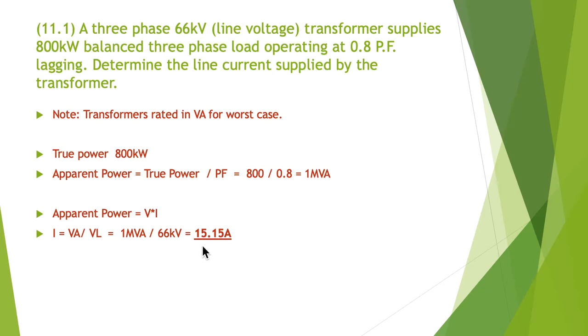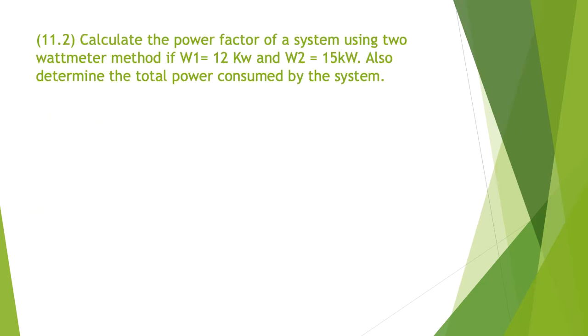Problem 11.2: Now we have to calculate the power factor for a system using a two wattmeter method. They tell us that wattmeter one is 12 kilowatts and wattmeter two is 15. Also determine the total power consumed by the system.